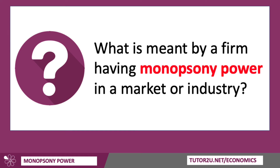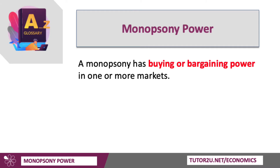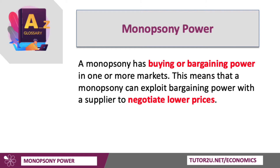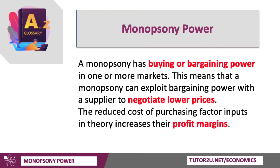What's meant by a firm having monopsony power in a market or an industry? A monopsony is where a business has buying or bargaining power with suppliers in one or more markets. This means that a business can exploit that bargaining power with a supplier, perhaps to negotiate lower prices, which means the cost of their inputs will come down and in theory increases their profit margins.